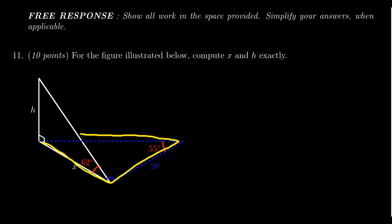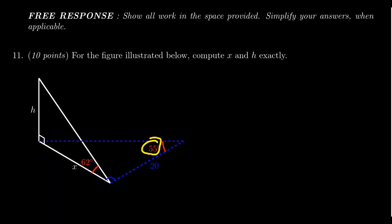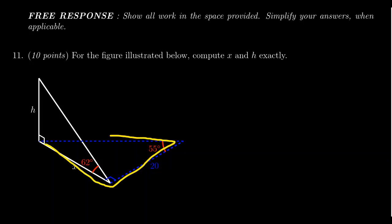The blue right triangle, which we see right here, has an angle of 52 degrees. Its adjacent side is 20 and its opposite side is X. Since the blue triangle has only one unknown and the white triangle has two unknowns, we're going to solve the blue triangle first.